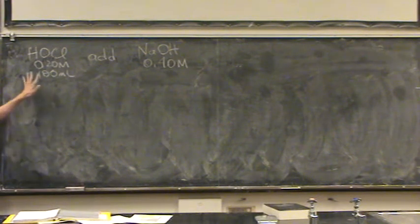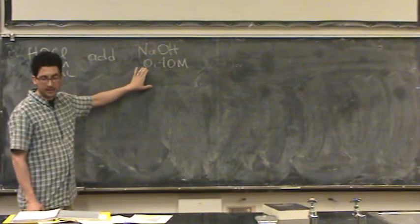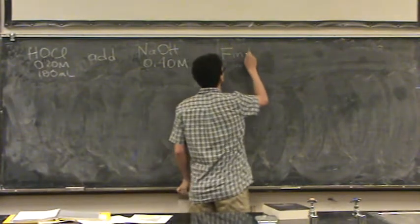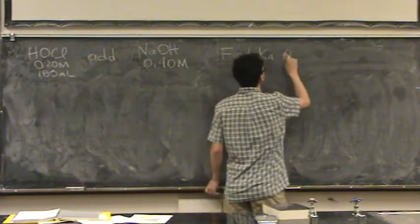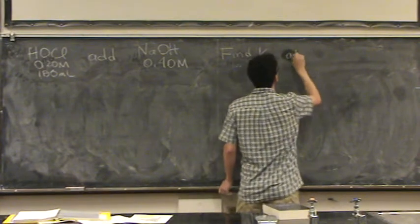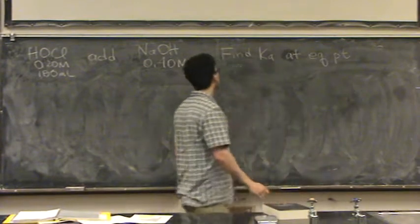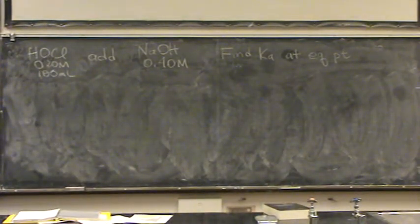So I'm given this information - I have the information for the acid. For the base, I only have the molarity. I want to find Ka at that equivalence point. Ka is not going to change for the acid at all, but I'm interested in that equivalence point.